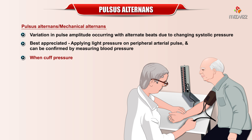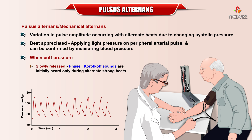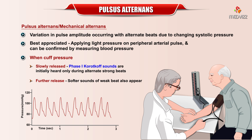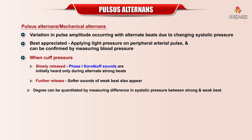When the cuff pressure is slowly released, the phase 1 Korotkoff sounds are initially heard only during the alternate strong beats. With further release in the cuff pressure, the softer sounds of the weak beat also appear. The degree of pulsus alternans can be quantitated by measuring the difference in systolic blood pressure between the strong and the weak beats.